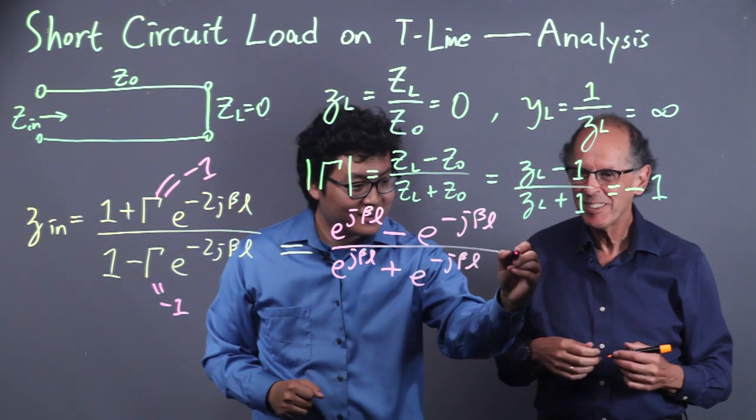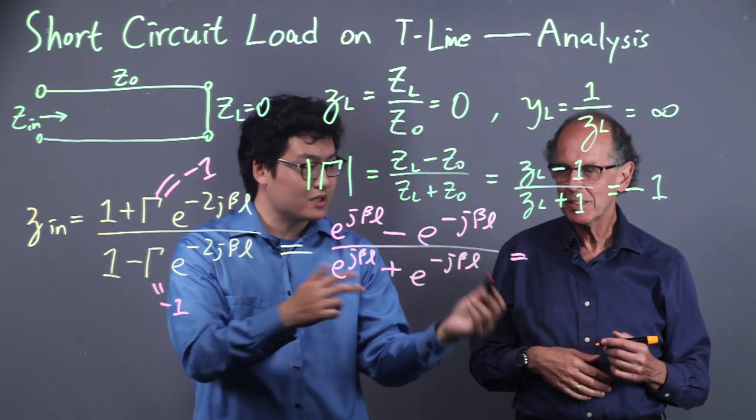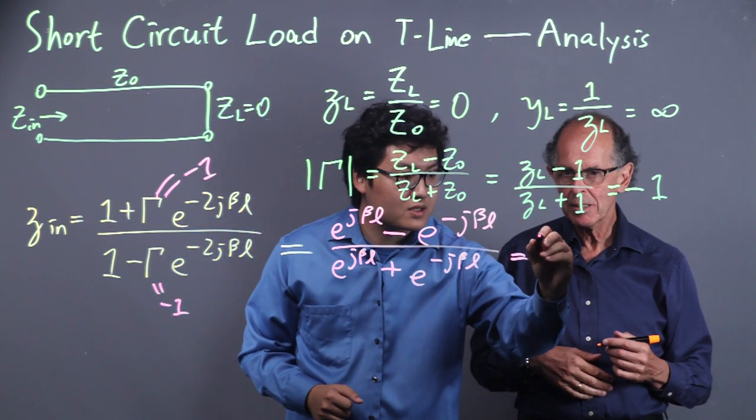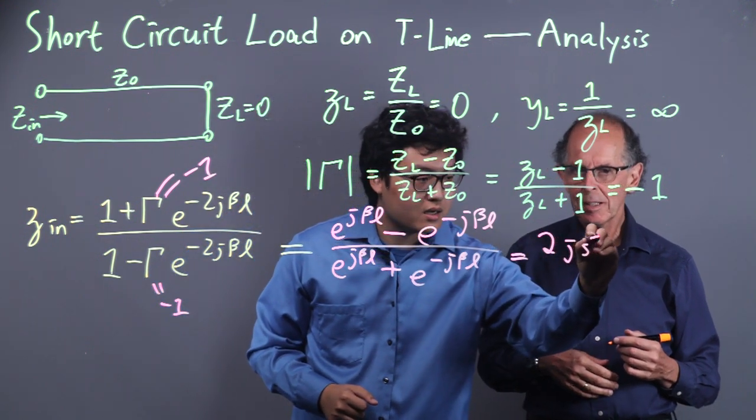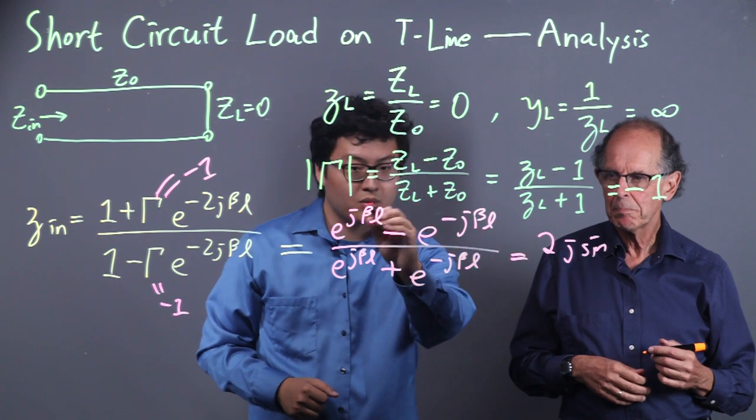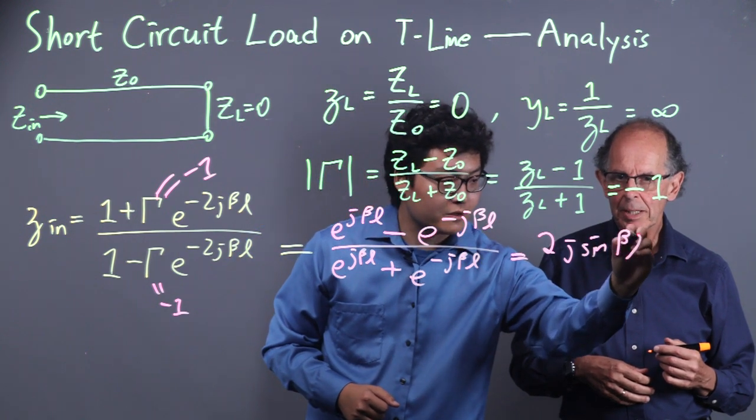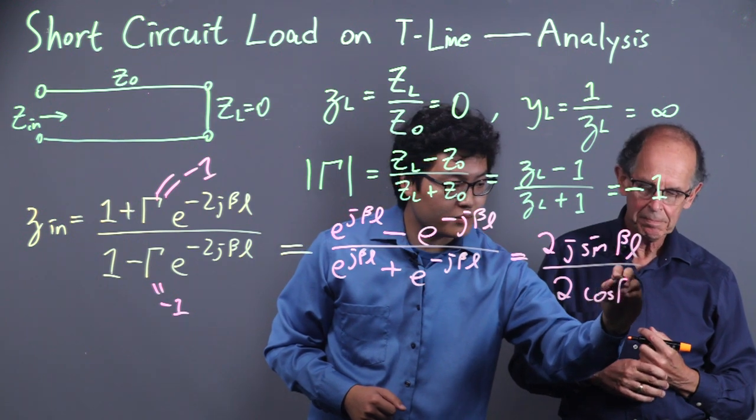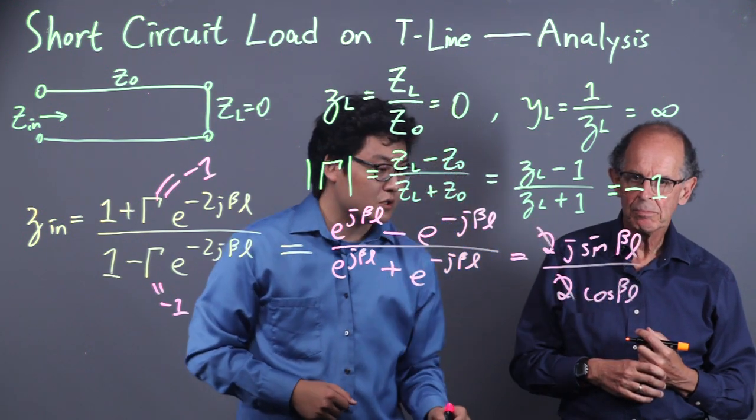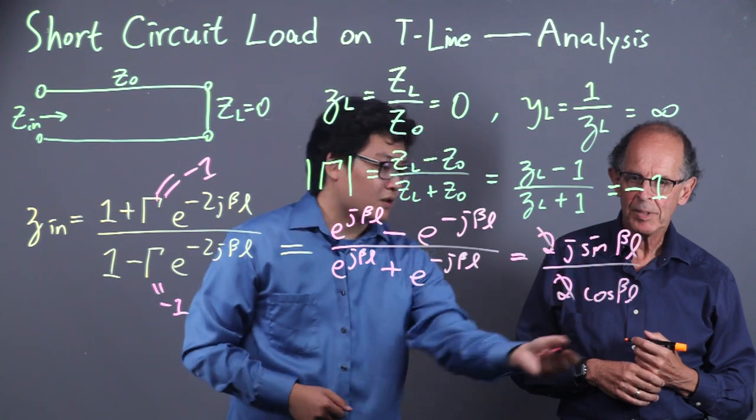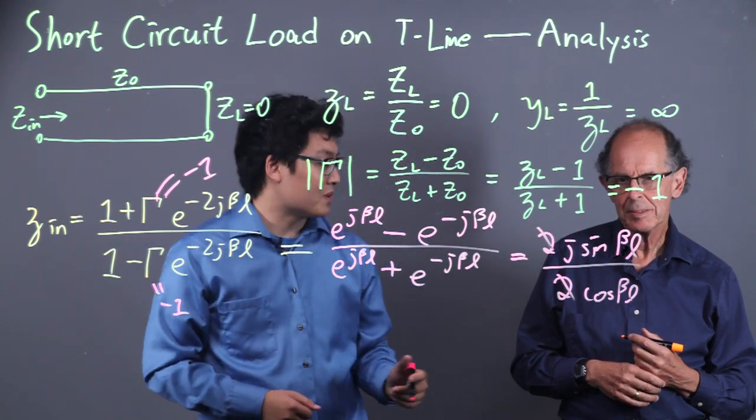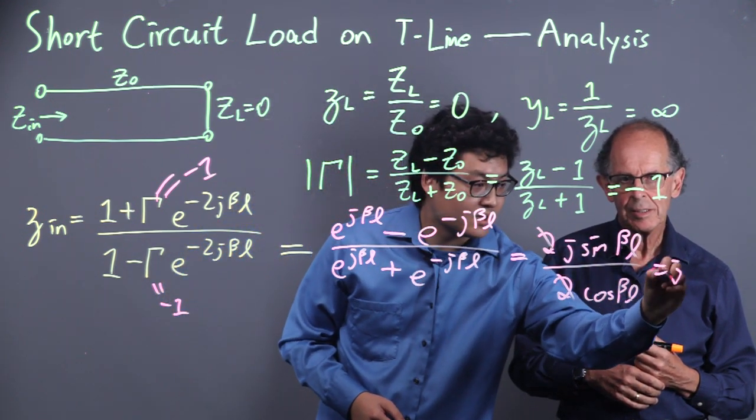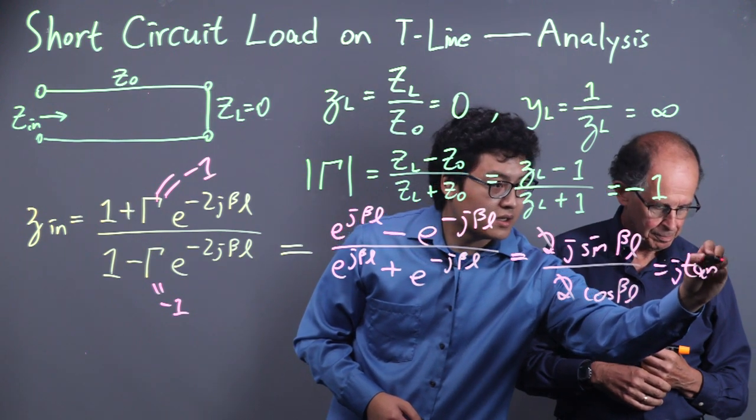The top part with the minus sign is related to sine. So it's 2j sin beta L divided by 2 cos beta L. The 2s cancel, and sine divided by cos becomes tan, so you get j tan beta L. So much cleaner than before.